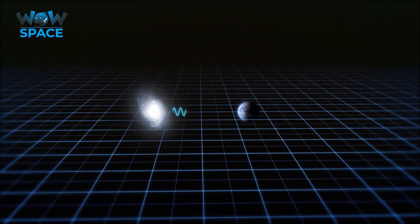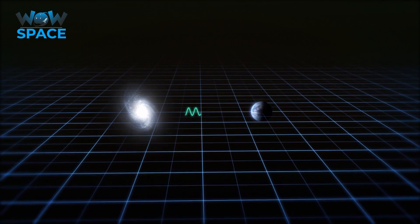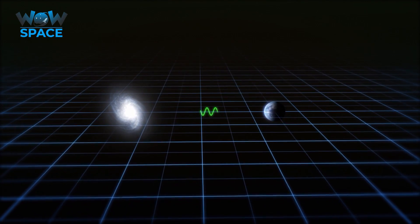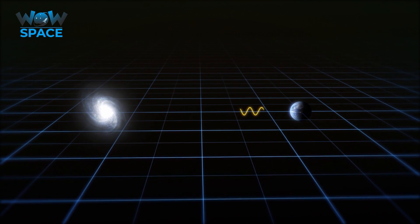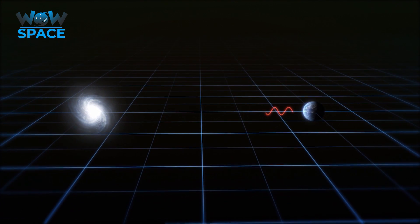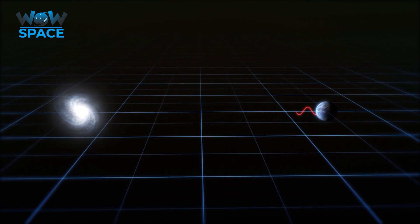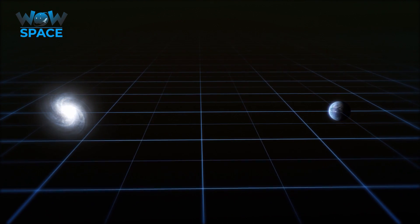The redshift of galaxies can become so extreme that light that was emitted in the visible light spectrum from billions of light years away, is stretched so much that it eventually reaches us in the form of infrared wavelengths, beyond our eyes' capabilities to see.